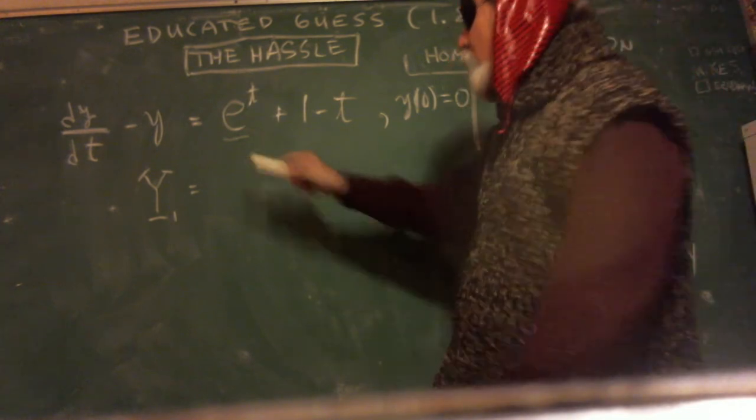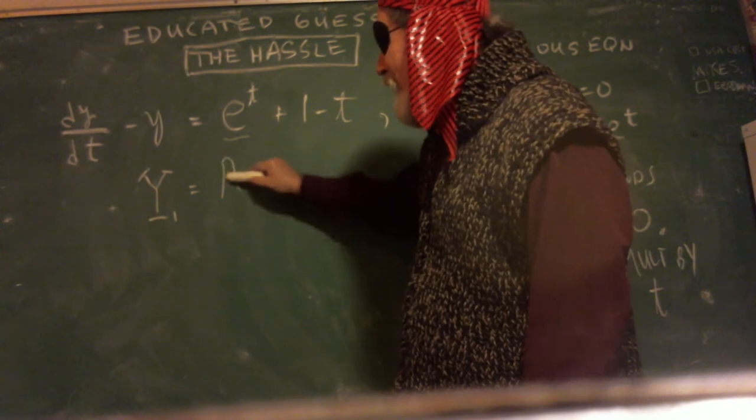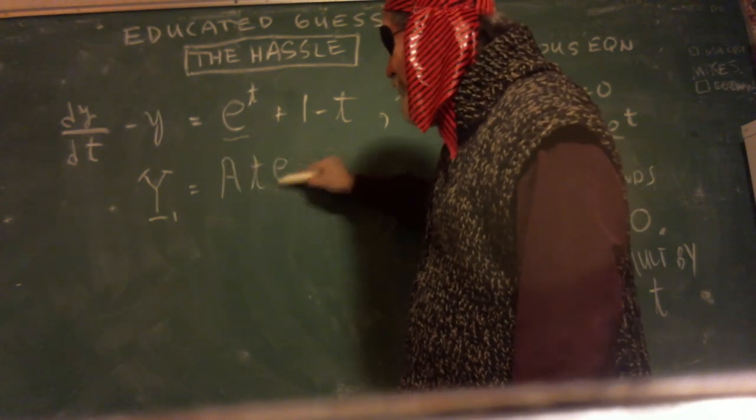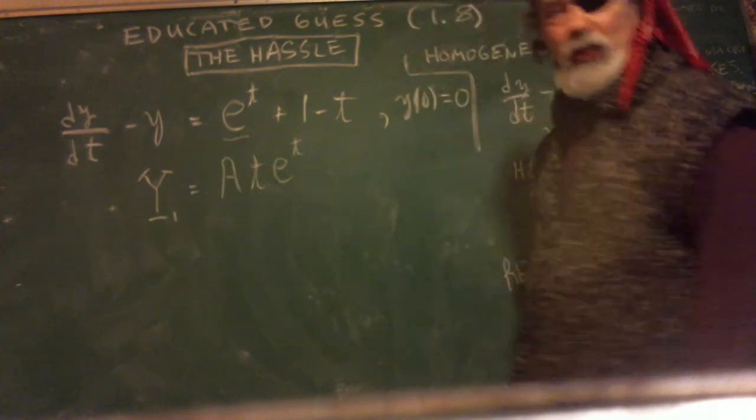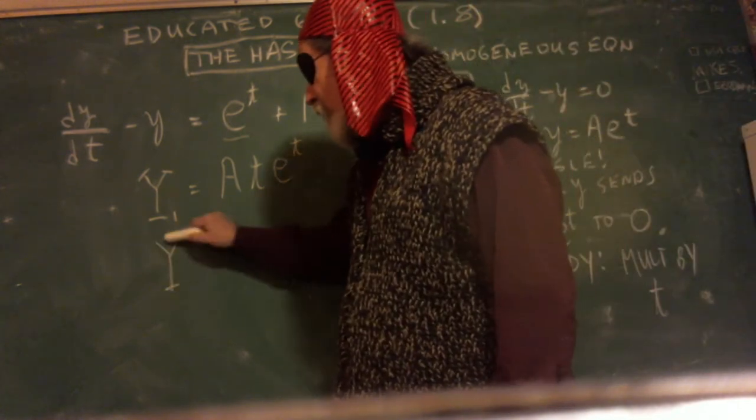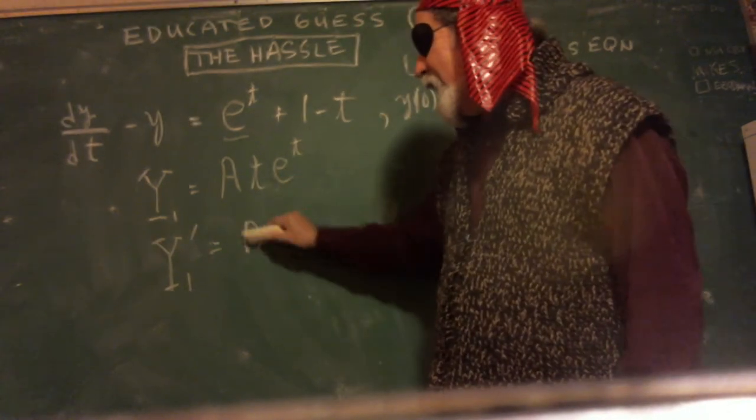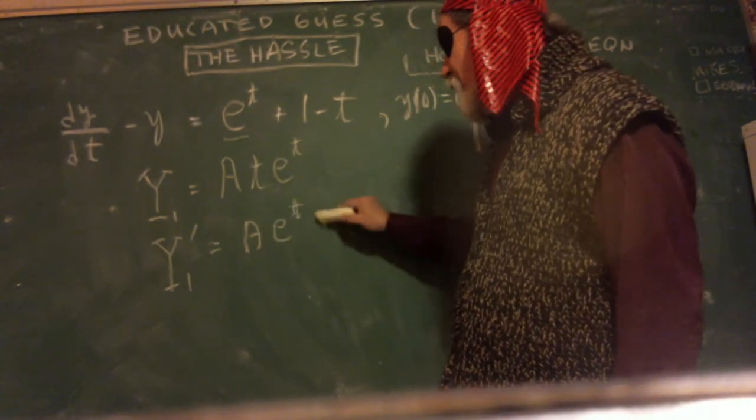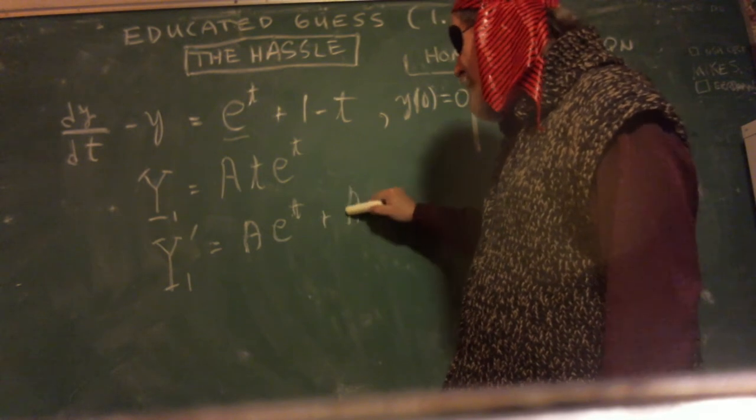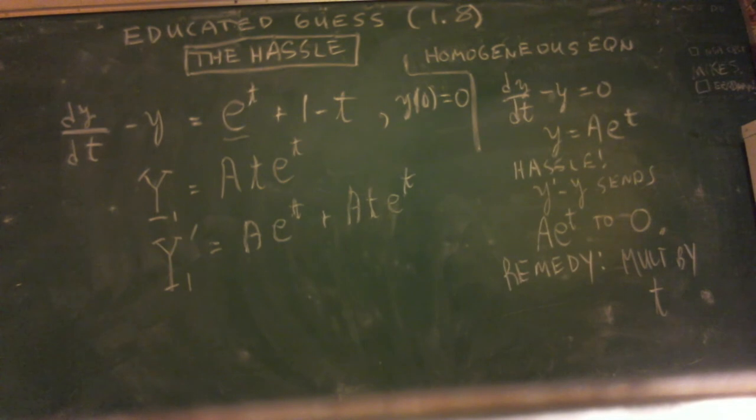All right. Now, big y sub one, you guess it to be a·t·e^t. That's your guess. And now, let's take the first derivative. And product rule. It's going to be a·e^t plus a·t·e^t. Think about that product rule for a second. Remember, the derivative of e^t is just e^t. So it gets its turn.